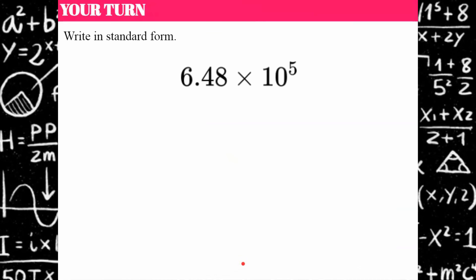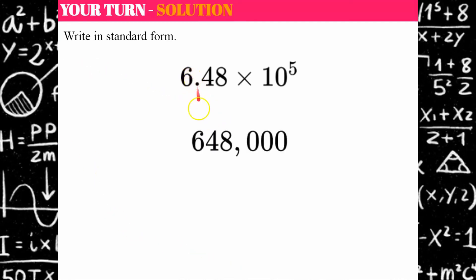Your turn — I'd like to see if you can write this in standard form. Go ahead and pause, come back and hit play. Welcome back. We're going to take our decimal point and move it. We need to keep our digits for 6.48 — but that's only two decimal digits and I need three more. So fill in with zeros: one, two, three. You fill in with zeros if you don't have enough digits. So 6.48 times 10 to the fifth is equivalent to 648,000.